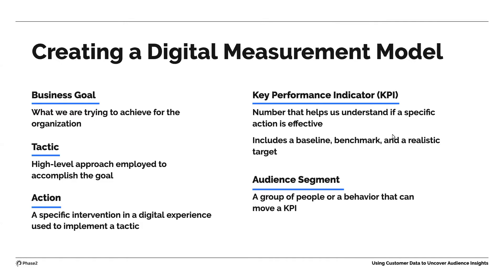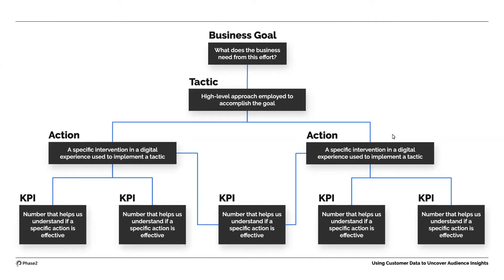The KPIs, of course, are the numbers that help us understand if a specific action is effective, and should always include a baseline, a benchmark, and a realistic target. And finally, a good model will include an audience segment — a group of people or set of behaviors that we believe can move that KPI in the right direction. So a business goal drives down to a tactic; we may have several actions that roll up to a same tactic. For any action, we can measure its effectiveness via one or more KPIs. There can be multiple tactics attached to each goal. Once we have a model like this and have established KPIs to measure the effectiveness of those actions, then we can develop dashboards to report on those KPIs.